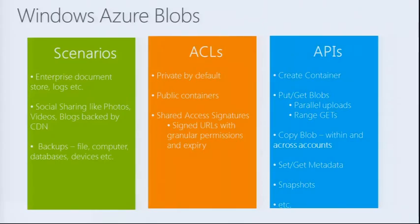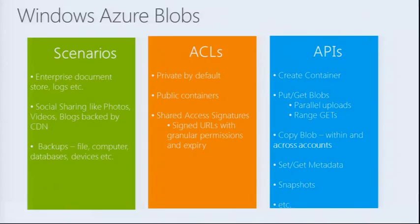In terms of APIs, we have create containers, put and get blobs. Copy blob is another very useful API where you can make backups of your blob to protect your application from errors. We've also introduced copy blob across accounts — a new cross-account copy feature. Get/set metadata allows you to store metadata with the blob. Snapshots are another interesting scenario — you can snapshot your blob to create versions or checkpoints, and you can always promote a version to be the writable copy. Snapshots are read-only copies.